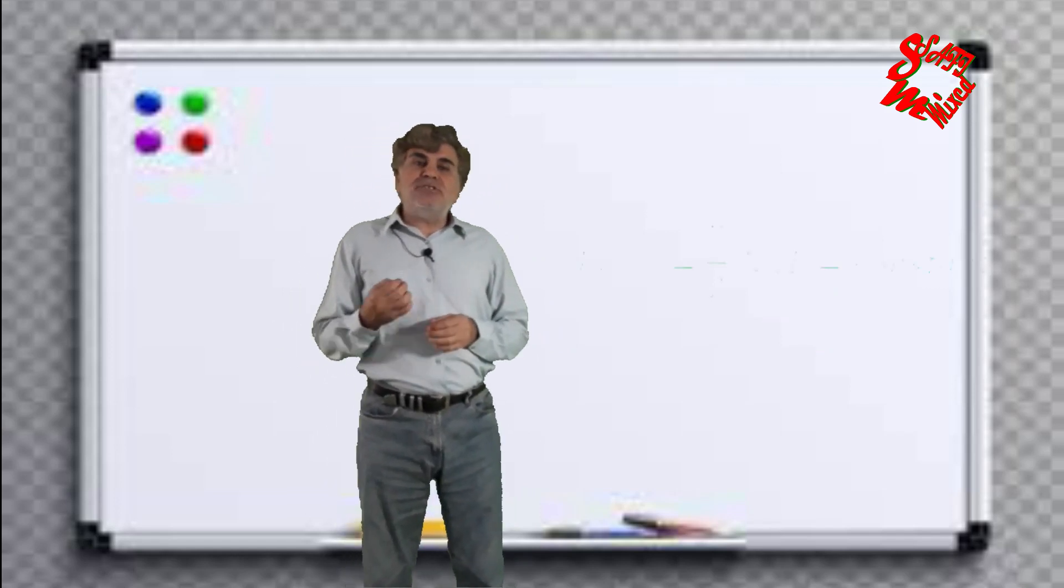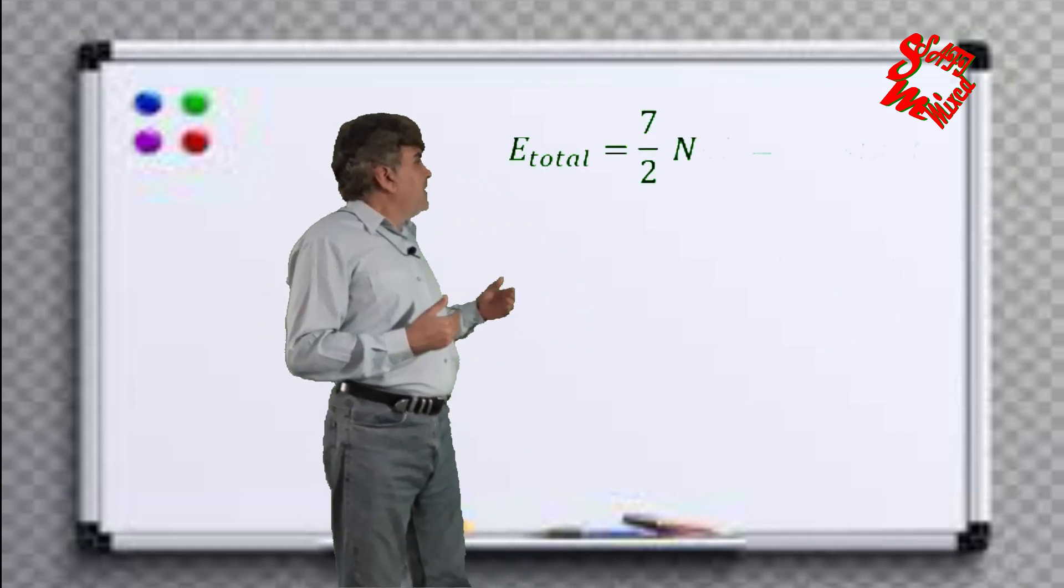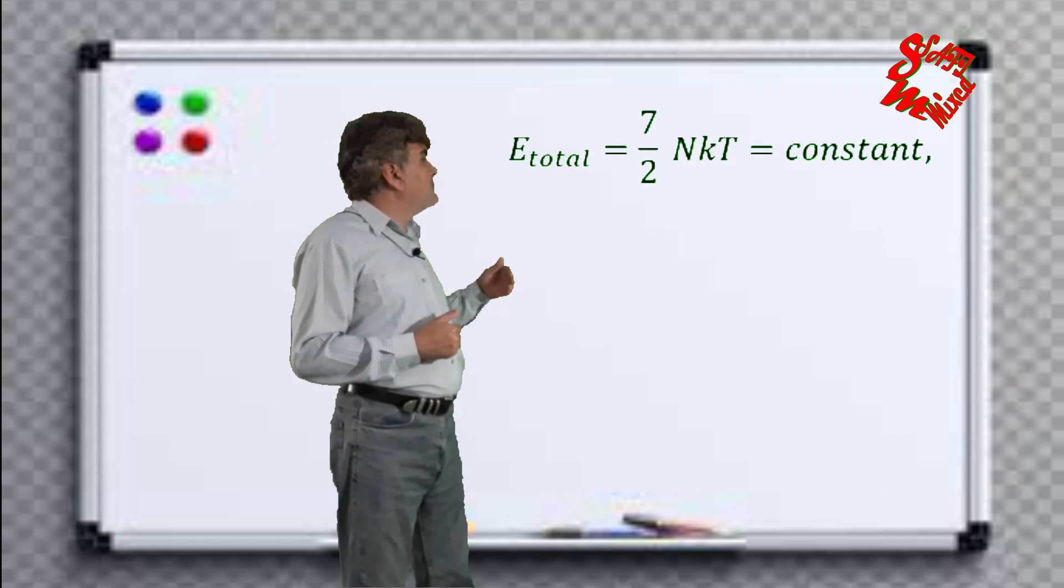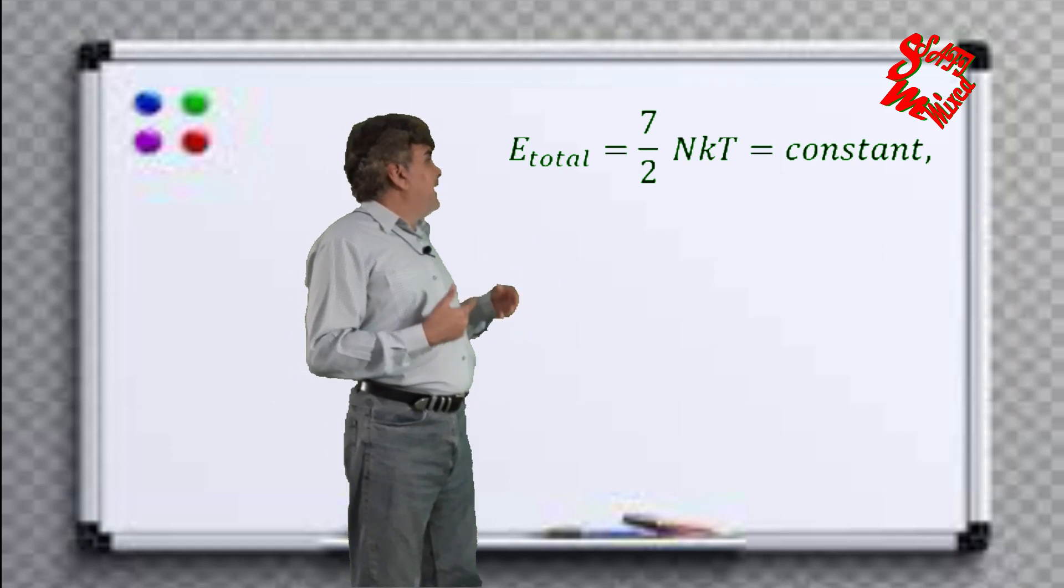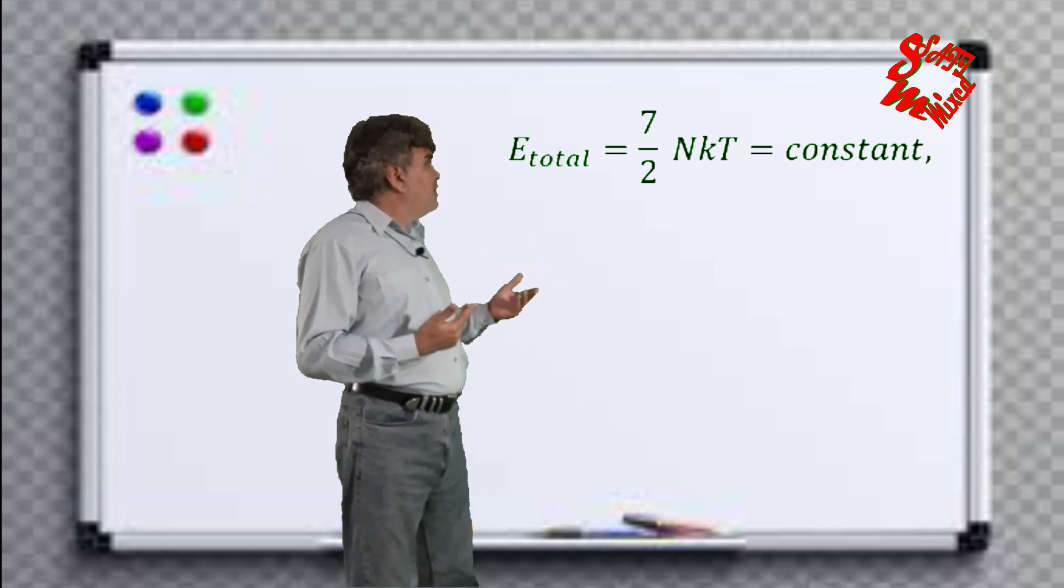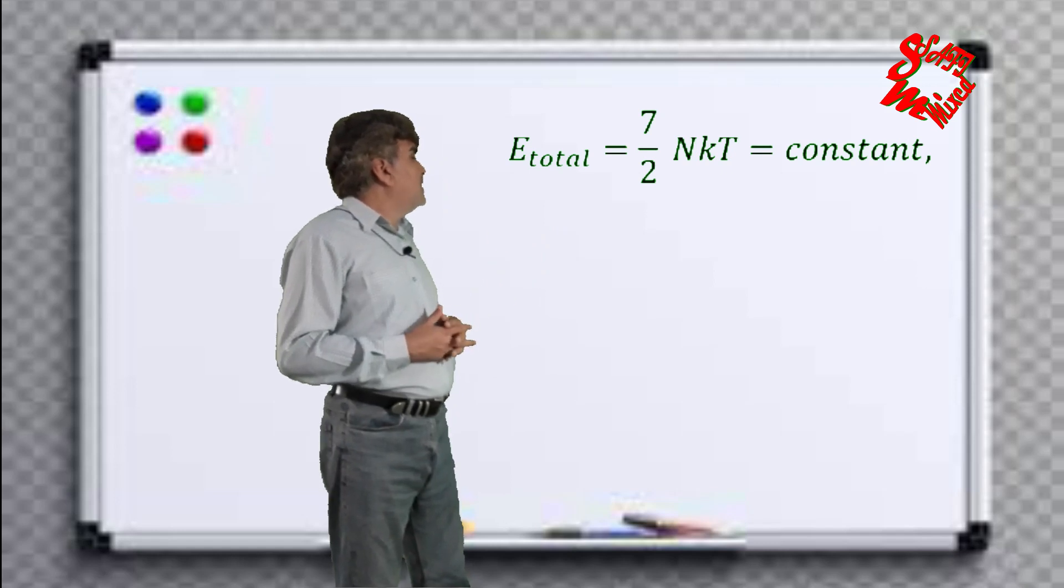Mathematically, the energy of the room satisfies the condition E_total = (7/2)NkT. Since N × T is constant, therefore it results into a constant value.